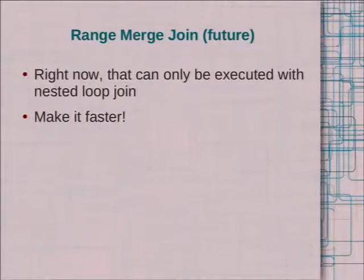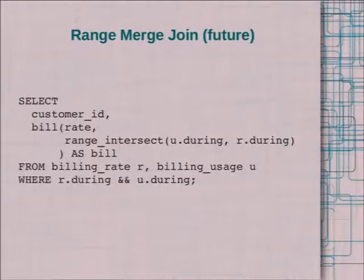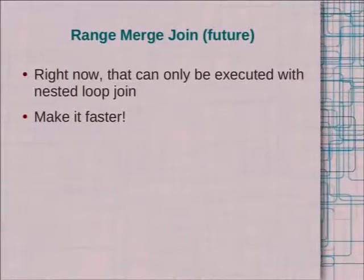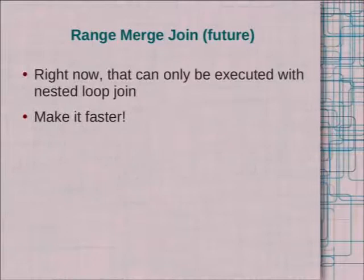Back to range merge join: in the old system this would be very expensive. Thanks to range types it's a little bit better — it can maybe use an index nested loop, a nested loop with an index on the inner side. But without that it would have to use a nested loop like for a non-equijoin, which is very slow. The range types did help a little bit, but we really are going to need a range merge join to make those queries useful for larger, more complex analytical problems.